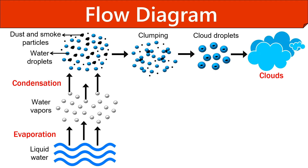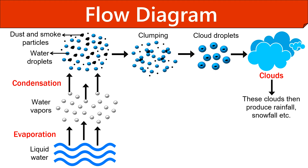These cloud droplets associate to form clouds. When enough cloud droplets form within the cloud, it leads to rainfall and snowfall, and the process is called precipitation.